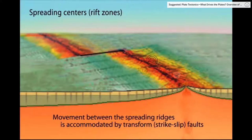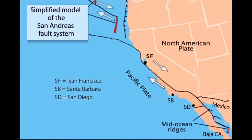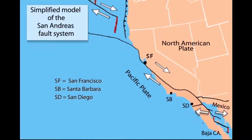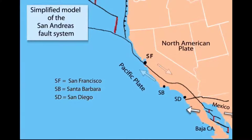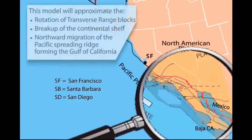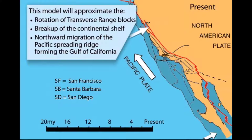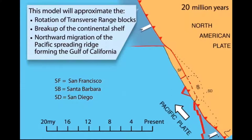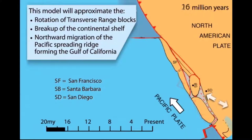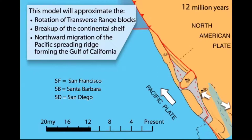Backing out to map view, we see the simplified San Andreas Fault System cutting through California. As the movement of the plates continues along this plate boundary, it is forcing Baja California away from Mexico and causing Santa Barbara and San Diego to migrate northward towards San Francisco. This animation by Tonya Atwater shows a tectonic model for the 20-million-year evolution of the region, depicting the rotation of the transverse range blocks, the breakup of the continental shelf, and the opening of the Gulf of California as the Pacific plate grinds northward against the North American plate.